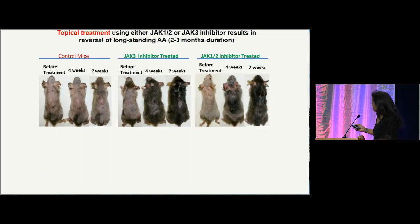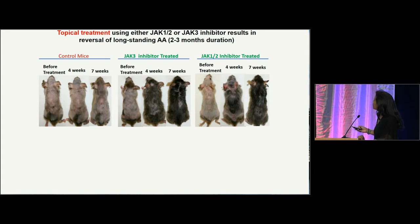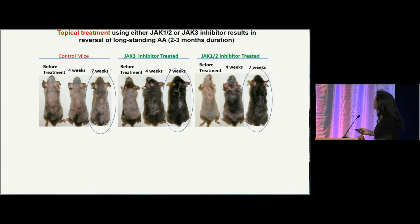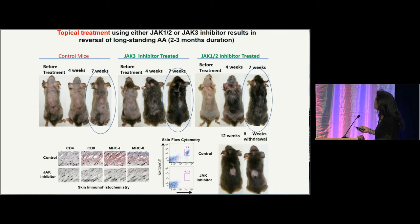Further, they looked at topical delivery of Janus kinase inhibitors and were able to show that they could reverse longstanding alopecia areata via treatment of these mice with topical tofacitinib and ruxolitinib. And they were also able to show normalization of the infiltrates.